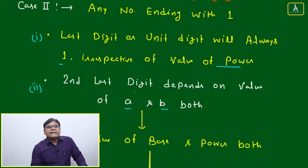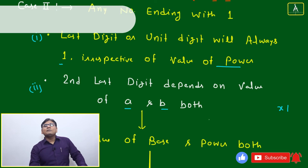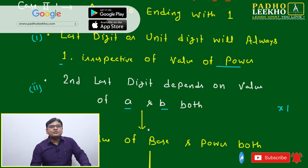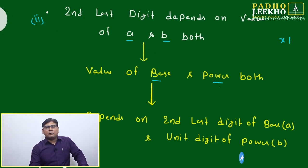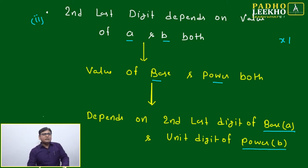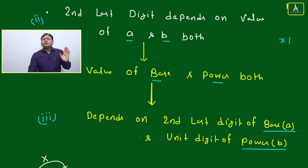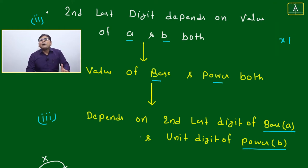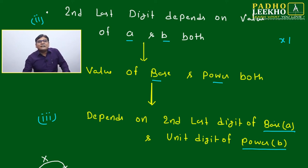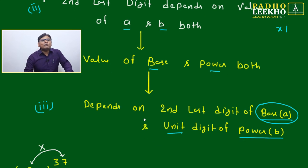The three steps: Step 1 — unit digit is always one. Step 2 — find the second last digit, which depends on the second last digit of base A and the unit digit of power B. Step 3 — multiply those two values together; the unit digit of that product becomes the second last digit of the result. So the last two digits are: [unit digit of (tens digit of A × unit digit of B)] followed by 1.